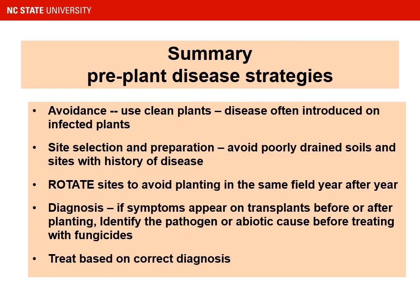In summary, pre-plant disease strategies: avoidance is your first and most important tool. Use clean plants — in an annual hill production system, diseases are most often introduced on infected plants, so clean plants are a must. Your site selection and site preparation have a bearing on disease; a poorly drained soil or a site with a history of disease may be the source of your problem. Rotate sites to avoid planting in the same field year after year. If you do see a problem, get it diagnosed — whether symptoms appear on transplants before or after planting, identify the pathogen or abiotic cause before deciding on a treatment strategy. A correct diagnosis is essential before you can know how to go forward.